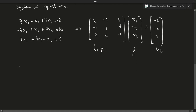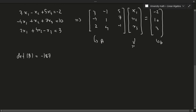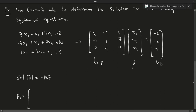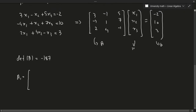The determinant of A equals −187. Now let's compute A1, A2, and A3. For A1, we replace the first column of A with B = [−2, 10, 3], giving the matrix [[−2, −1, 5], [10, 1, 7], [3, 4, −1]]. Computing this determinant, det(A1) = 212.